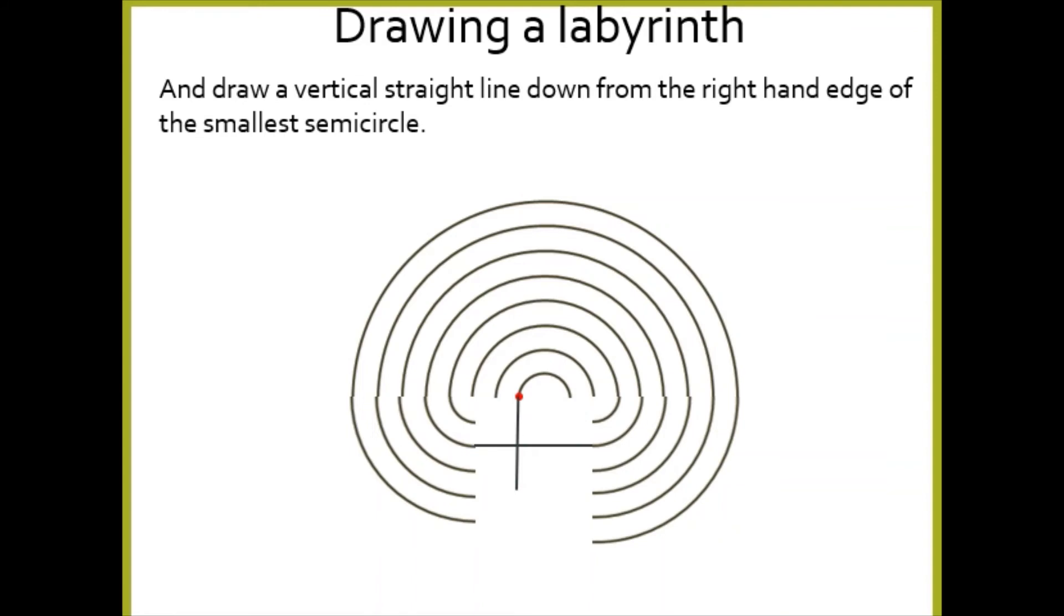Then you're going to draw a vertical straight line down from the right-hand edge of the smallest semicircle. So from this point here, your smallest semicircle, you draw a little line down. How are we doing so far, we still all with me?